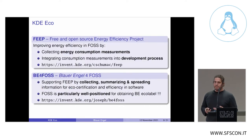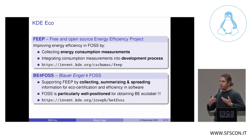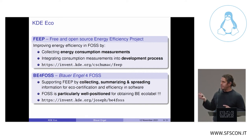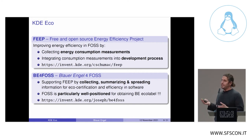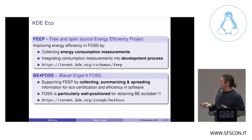KDE Eco is made up of two projects. The first is the community-driven FEEP project — the Free and Open Source Energy Efficiency Project — whose goal is to collect energy consumption measurements and integrate these measurement tools into the development process. The Blauer Engel for FOSS project supports FEEP by collecting, summarizing, and spreading information about eco-certification with Blauer Engel and energy consumption measurements. A key takeaway is that free and open source software is particularly well positioned for obtaining a Blauer Engel Eco label.